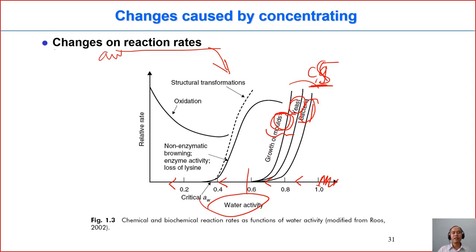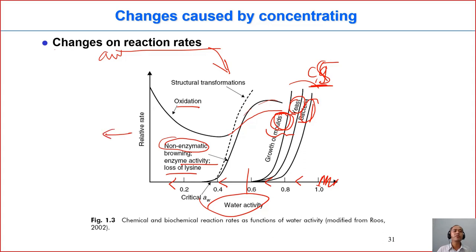When water activity is low enough, it inhibits all yeast, mold, and bacteria. Going down further, there are changes in non-enzymatic browning reactions, enzyme activities, and oxidation. When we do concentration, we go somewhere in this range on the water activity scale. If we go further to drying, roasting, and so on, we go down further.